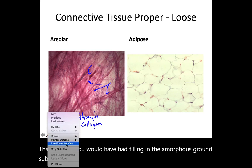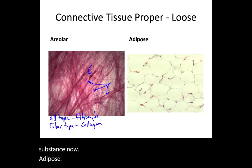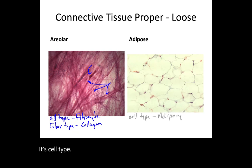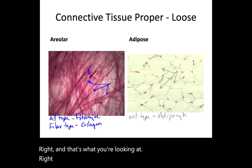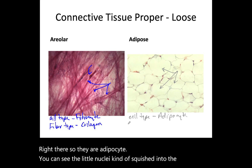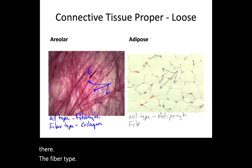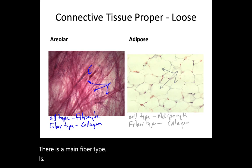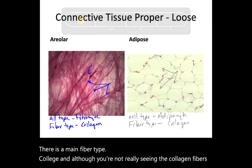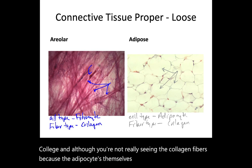Adipose tissue has a cell type of adipocytes — that's what you're looking at here. You can see the little nuclei squished into the corners. The main fiber type is collagen, although you're not really seeing the collagen fibers because the adipocytes themselves are so enlarged that everything else gets pushed out.